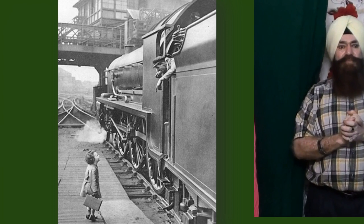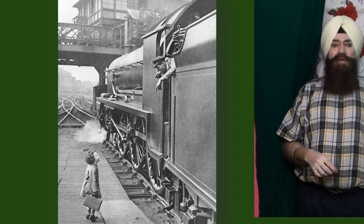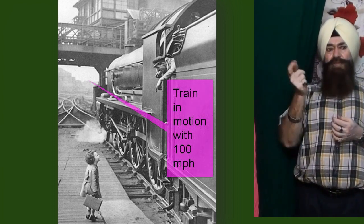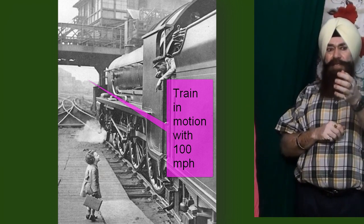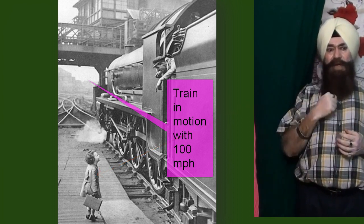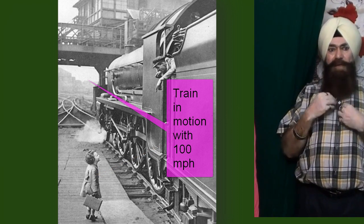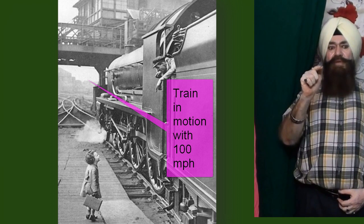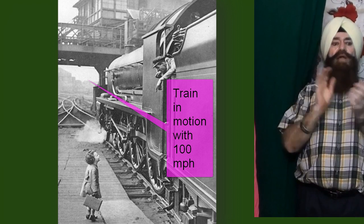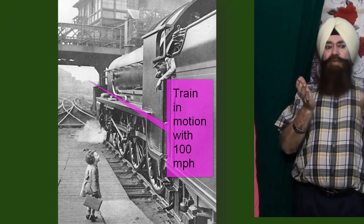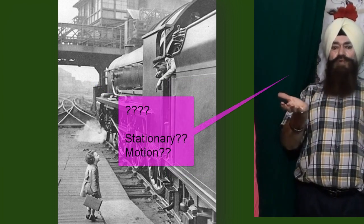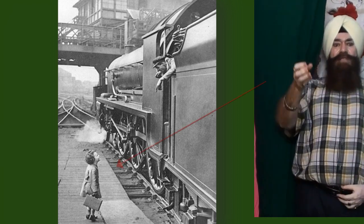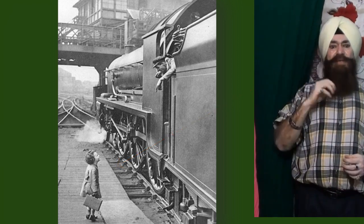Suppose I am sitting on a train moving at a constant velocity of 100 miles per hour and I look through the window and I see a person standing ahead of the train. But I also see him approaching me at 100 miles per hour. Then which one of us is truly stationary, and which one of us is truly moving? You may think that person standing on the ground is stationary, because it was already in your mind.